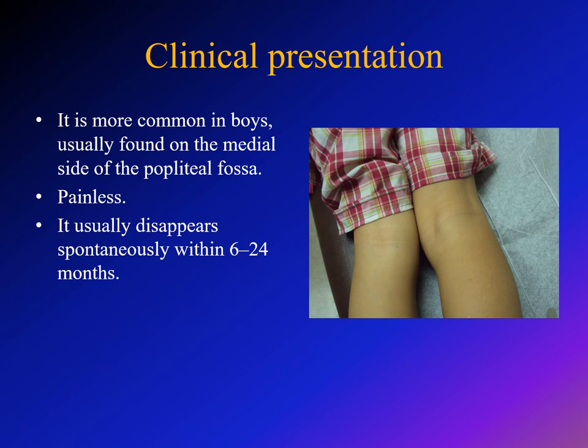The clinical presentation: it is a mass and cyst in the posterior knee, so the family will come with the child and tell you they noticed swelling behind his knee. This condition is more common in boys and usually occurs on the medial side of the popliteal fossa. Characteristically, the swelling is painless when you press on it, although the child may complain of some discomfort in the knee after prolonged play.